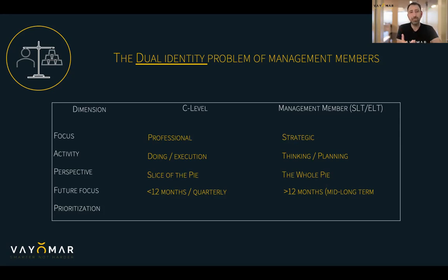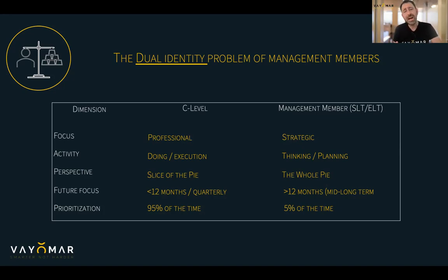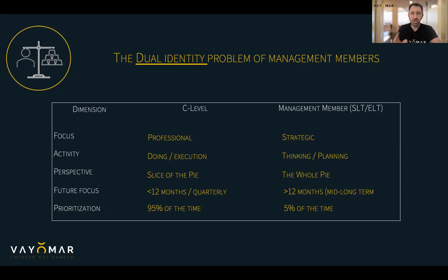None of this would be a major problem if not for the final aspect of the duality: how much time do I actually spend under one hat versus the other? At least this has been our experience — these individuals usually spend 90 to 95% of their time under the C-level identity. Most of their week is spent with their teams within their organizations, meeting major targets. And then when they're finally invited to the weekly or bi-weekly management meeting, we think they can just take off that hat and put on the management hat. They can't. When your brain is shaped based on 95% of the time focusing on professional execution, thinking only about your part of the pie, 12 months or less — that thinking is going to spill over into the management meeting.